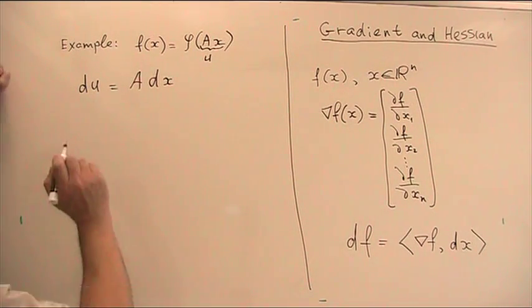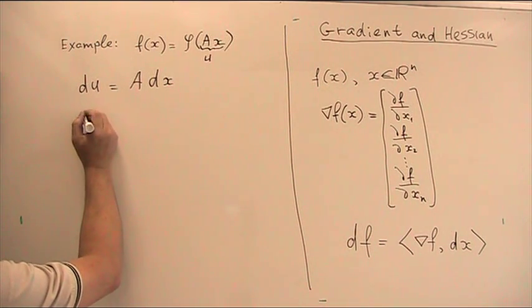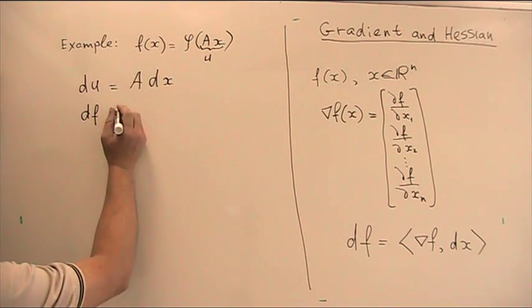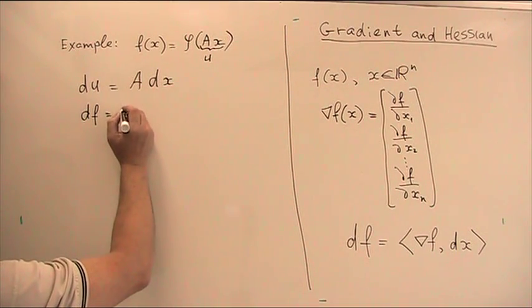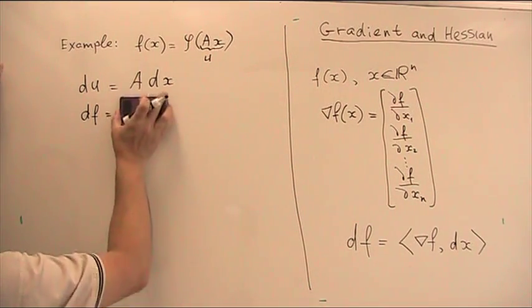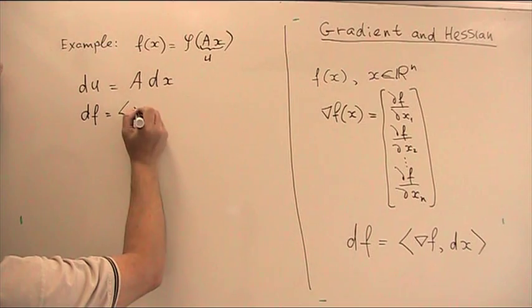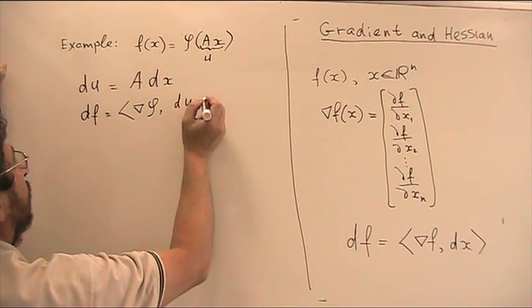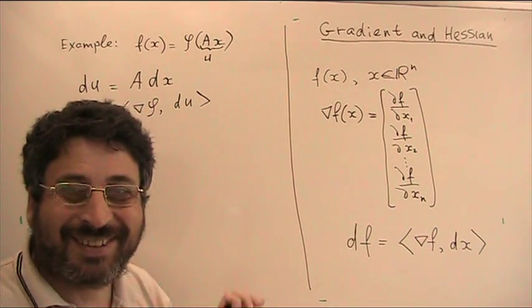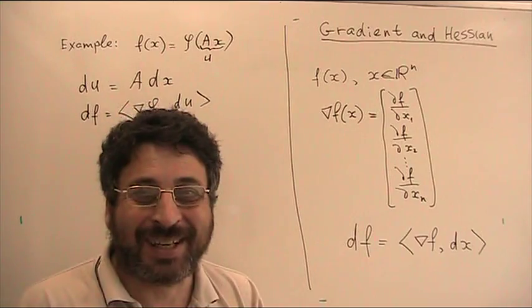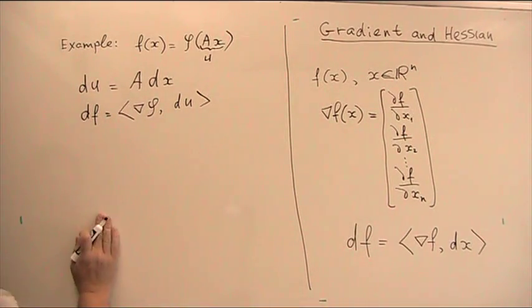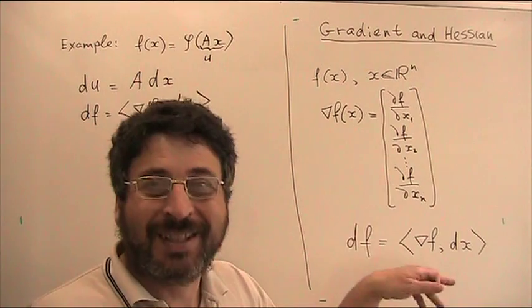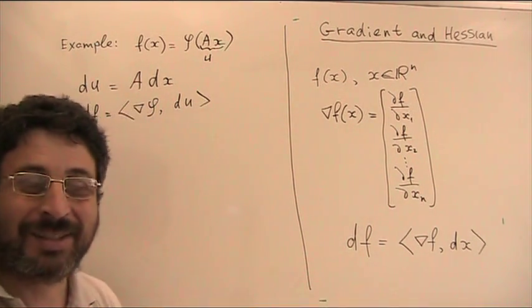It's just A multiplied by dx. And now I am ready to answer the question what will be df. df will be gradient by definition of gradient of φ, gradient of φ, inner product with du. I just give you a brief idea what should be done. You can accomplish my calculation. And then you should finally get df as inner product of dx with something.